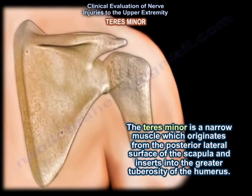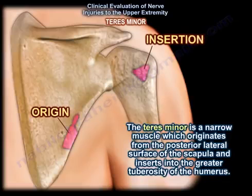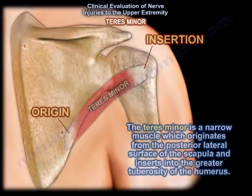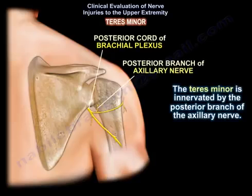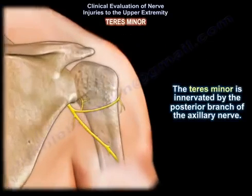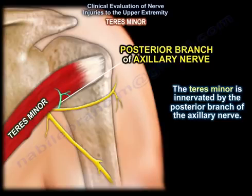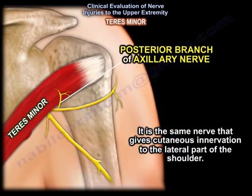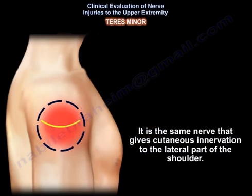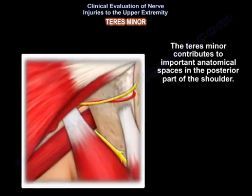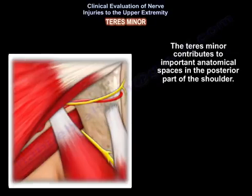The teres minor is a narrow muscle originating from the posterolateral surface of the scapula, inserting into the greater tuberosity of the humerus. It is innervated by the posterior branch of the axillary nerve, which also provides cutaneous innervation to the lateral part of the shoulder. The teres minor contributes to important anatomical spaces in the posterior shoulder region.